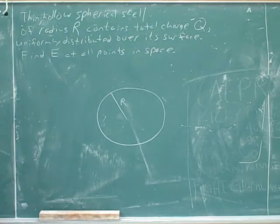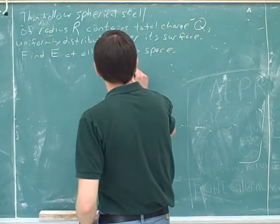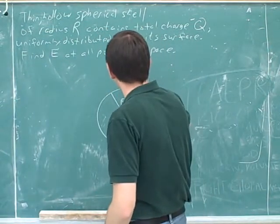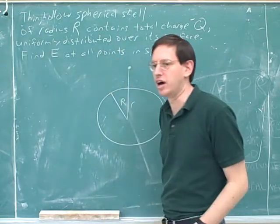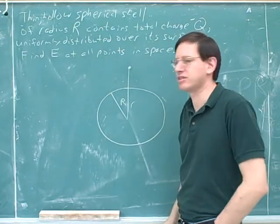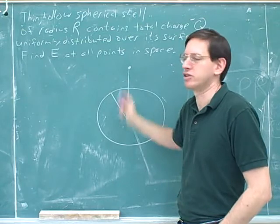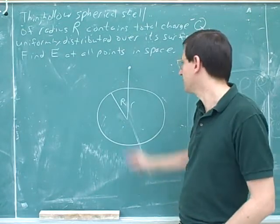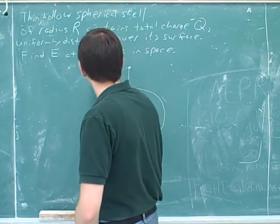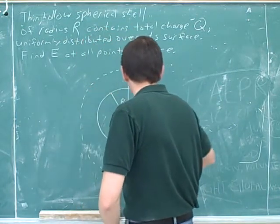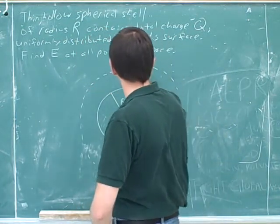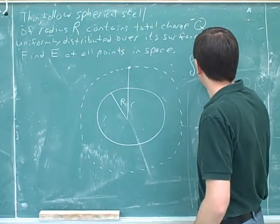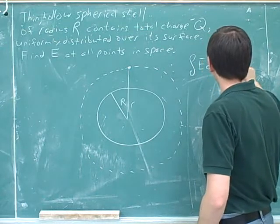And now we have to try to find the electric field at all points in space. Well, we might start by trying to find the electric field over here at a distance of lowercase r. But we would start by drawing the Gaussian surface. What would be a good surface to draw through here? Another shell. Yeah. Another sphere. The Gaussian surfaces are always hollow shells.